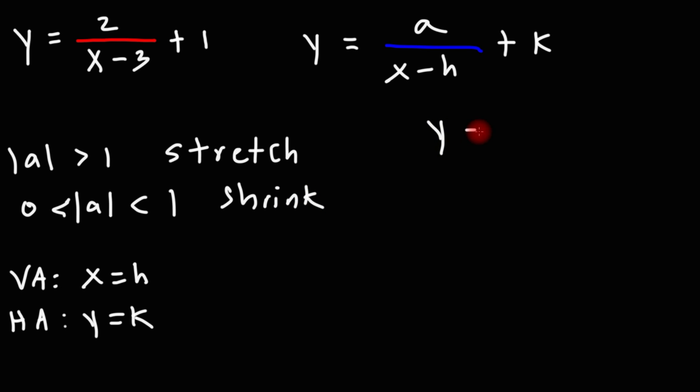Now here's the parent function y equals 1 over x. This graph has a generic shape that looks like this. When a is positive, when it's greater than 0, the graph is going to exist in quadrants 1 and 3.